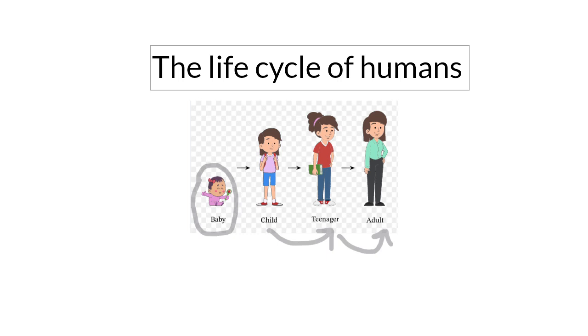So this is the life cycle of humans. This is the stages where we grow from a baby to an adult.